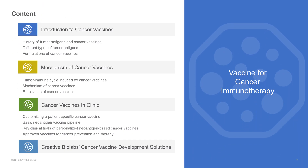In this presentation, we will go through the following topics. The first chapter is an introduction to the history and formulations of cancer vaccines and a brief introduction to several types of tumor antigens. The second chapter introduces the mechanisms of action of cancer vaccines. The third chapter is about cancer vaccines in clinical development and approved vaccines for cancer prevention and therapy. The last chapter shares information on Creative BioLabs' cancer vaccine development solutions.